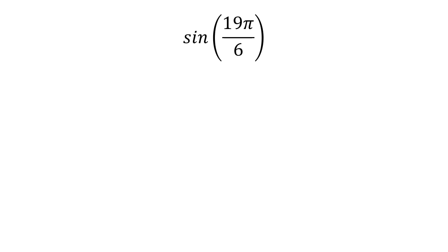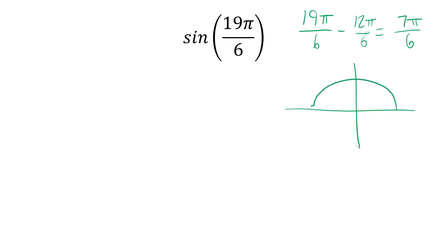The sine of 19π/6. That's outside my 0-to-12π/6 comfort zone, so I subtract 12π/6 and I'm left with 7π/6. That's 6π/6 plus one more π/6, giving a 30-degree reference angle in quadrant 3. The coordinates are (-√3/2, -1/2), and I want the sine, so the answer is -1/2.